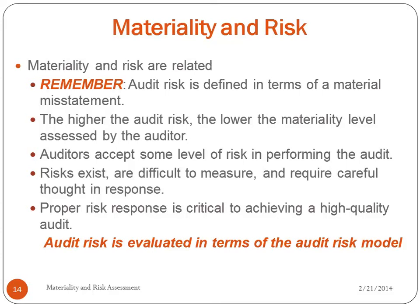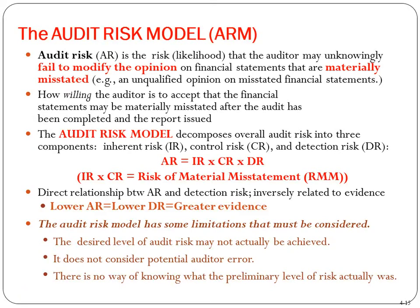Audit risk is evaluated using the audit risk model (ARM). Audit risk is the likelihood that the auditor may unknowingly fail to modify the opinion on financial statements that are materially misstated — giving an unqualified opinion on misstated financial statements. The audit risk model breaks down overall audit risk into three components: Inherent Risk (IR), Control Risk (CR), and Detection Risk (DR). The formula is: AR = IR × CR × DR. Inherent risk and control risk together equal the risk of material misstatement.